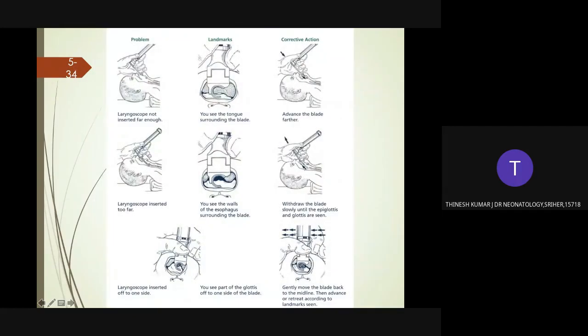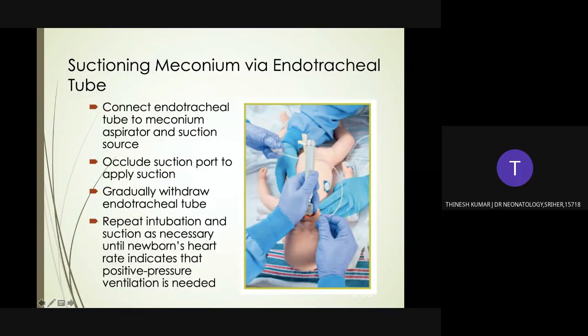Problems that can occur while inserting the endotracheal tube: if the laryngoscope is not inserted far enough, you will see the tongue surrounding the blade — advance the blade further. If the laryngoscope is inserted too far, you will see the walls of the esophagus surrounding the blade — withdraw the blade slowly until the epiglottis and glottis are seen. If the laryngoscope is inserted off to one side, part of the glottis will appear off to one side — gently move the blade back to midline.